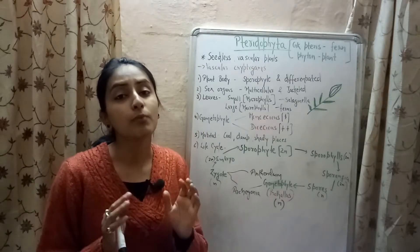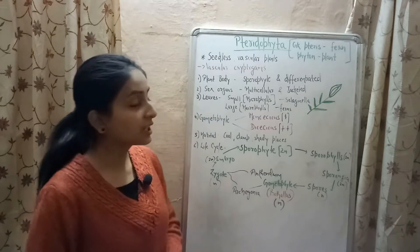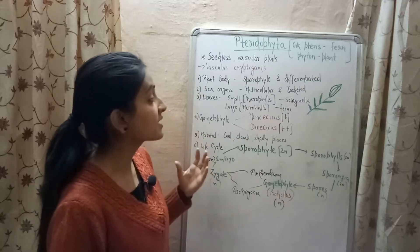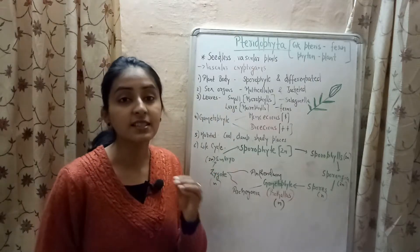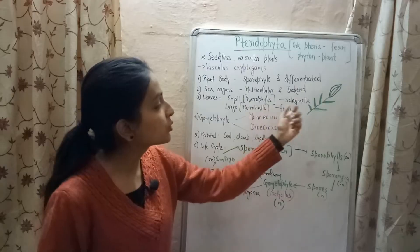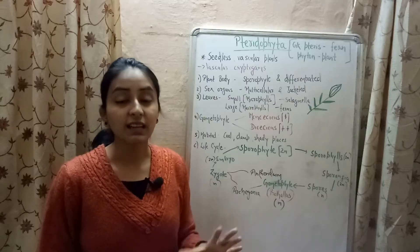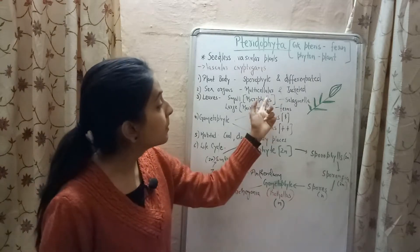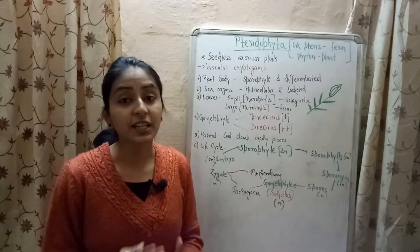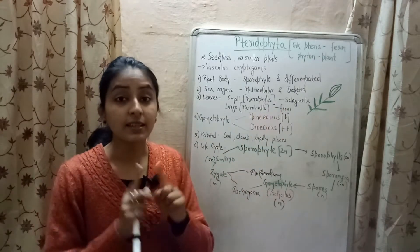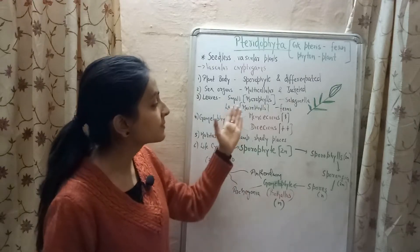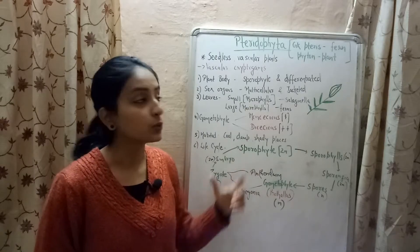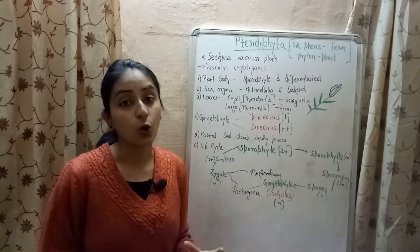There are two types of leaves in pteridophytes. Some plants have small leaves, and these are known as microphylls. For example, Selaginella is a pteridophyte plant that has small leaves known as microphylls. Whereas many other pteridophytes, like ferns, contain large leaves, and the large leaves are known as macrophylls.